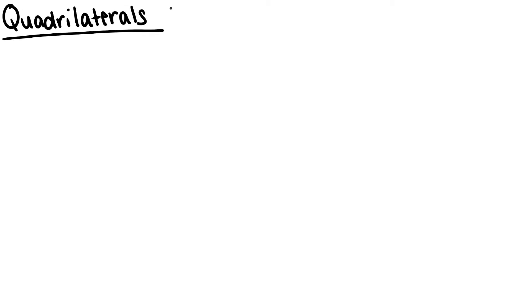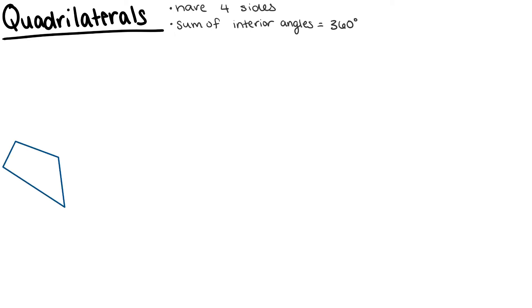Next, we have quadrilaterals. Quadrilaterals are polygons that have four sides, and the sum of their interior angles is 360 degrees. If we have a shape that has four sides and there's no relationship between any of the sides or any of the angles, it's simply a quadrilateral.